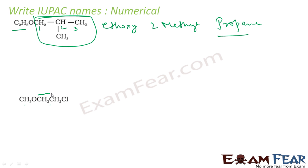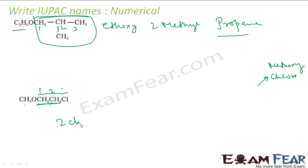Similarly, the parent chain has one and two carbons. I have a methoxy group here. I also have a chloro group attached to the parent chain. Alphabetically C comes before M, so it is 2-chloro at position two and 1-methoxy at position one, with two chain carbons — ethane. The full name is 2-chloro-1-methoxyethane.